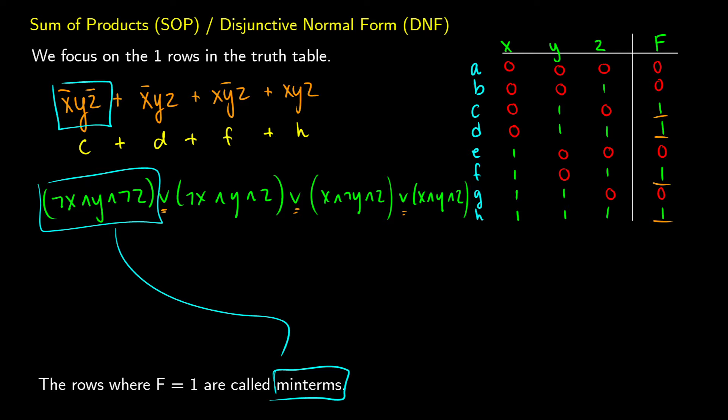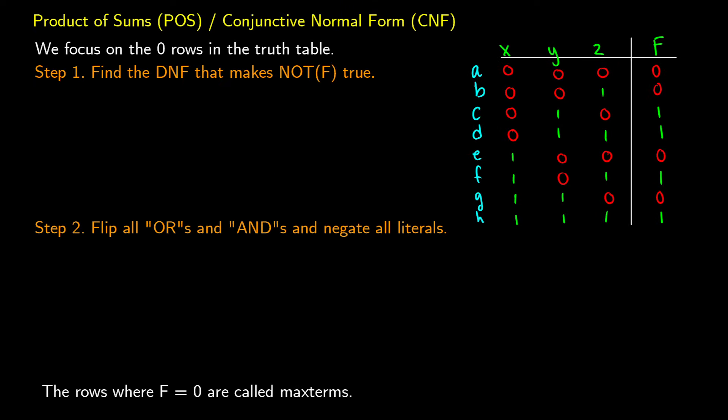There's also product of sums and conjunctive normal form. We'll show a straightforward way of doing this — it's a two-step process. We're going to focus on the zero rows in the truth table: first find the DNF that makes not-f true, then flip things around.